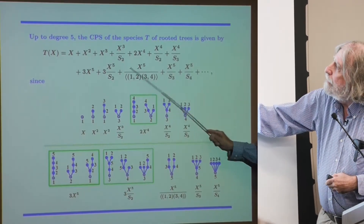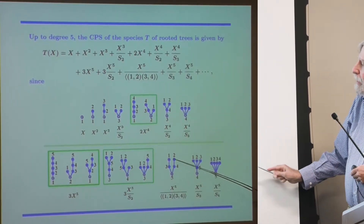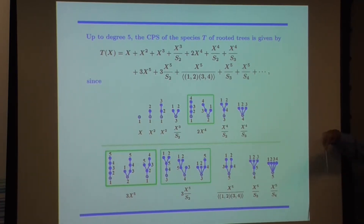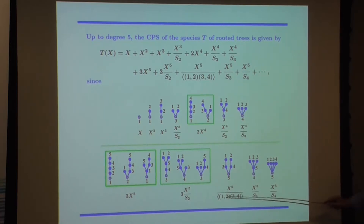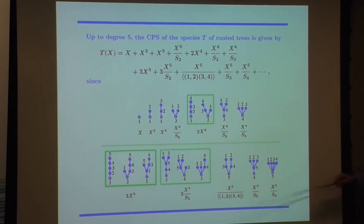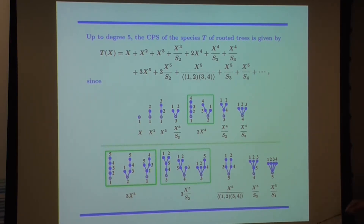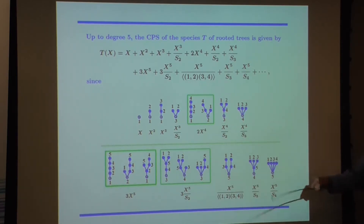The combinatorial power series of rooted trees can be written so that the first few terms have this form. The two similar trees share S_2 over X^5. One tree stands alone with coefficient one in front, because interchanging elements one and two requires simultaneously interchanging three and four to have an automorphism — so it is generated by the permutation that interchanges (1,2) and (3,4) at the same time. This is a very general kind of series: it contains every other kind of underlying series.